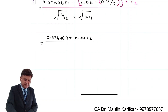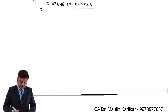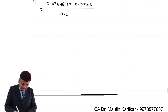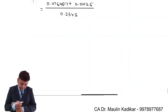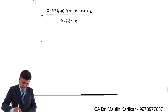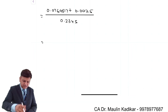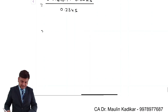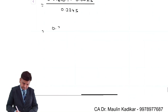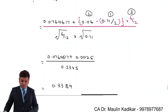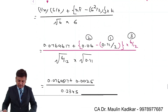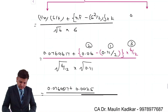So, 0.0769617 plus 0.0025, giving 0.0794617, divided by the denominator 0.2345. So the result is 0.3389. This is the very detailed method by which you can compute the answer, or otherwise there is an alternative method also.